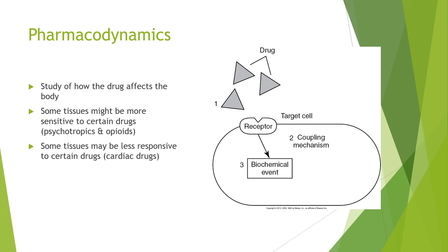Pharmacodynamics is the study of how drugs affect the body, including systemic drug effects as well as cellular and biochemical mechanisms of drug action. Some tissues may be more sensitive to certain drugs such as psychotropics and opioids, while other tissues may be less responsive, such as to cardiac drugs. Age-related changes in cellular response must be considered for each tissue and the specific drugs affecting it. Pharmacodynamic changes, combined with pharmacokinetic changes, help explain why a geriatric individual's response to drug therapy often differs from a younger individual's response.